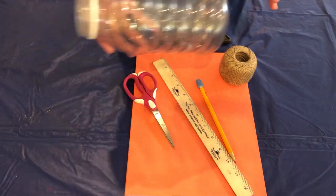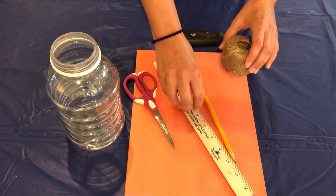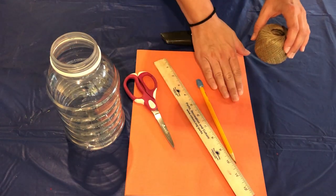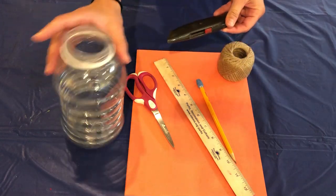So what you're going to need is an empty bottle, make sure it's dry inside, string, pencil, a ruler, scissors, some sort of paper, and a box cutter depending on what kind of container you are using.